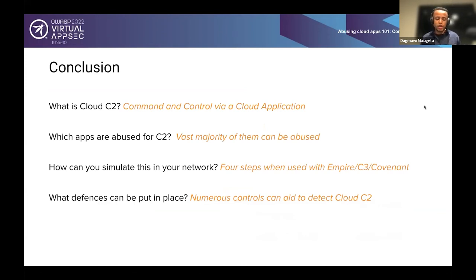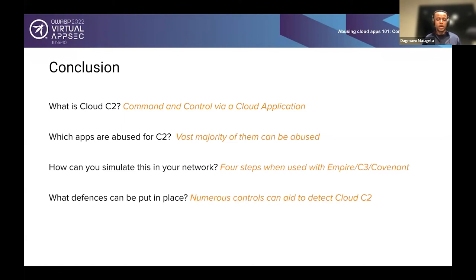Let's go all the way back and review those four key points. What is Cloud C2? We defined it as command and control via cloud application, with a few categorizations from the industry. Which cloud applications are abused for C2? We saw a vast majority can be abused, looked at trends and insights, categorized the apps, and saw which features are abused in each category. Then we covered how to simulate this in your network, going through two example applications — Dropbox and GitHub — using a four-step process with tools like Empire, C3, and Covenant. Lastly, we talked about defenses — numerous controls at the endpoint and network level to identify and detect Cloud C2, helping build a more complete security posture from a defender's standpoint.